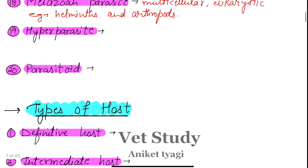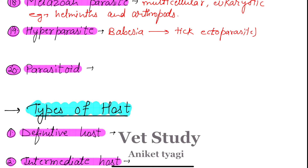Next we have the hyperparasite. Hyperparasites are those parasites which live in or on another parasite. For example, Babesia is a hyperparasite because it spends part of its life cycle inside a tick, and the tick itself is a parasite. So Babesia is called a hyperparasite.